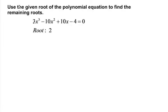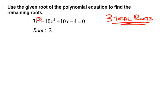Now let's look at a more complicated problem. We've been given one of the roots to this polynomial equation and we want to find the remaining roots. We know this is a third degree polynomial because we have an x to the third, so we should expect three total roots. We're going to take the one root we've been given and remove it from the polynomial equation — factor it out — and work with a depressed polynomial.